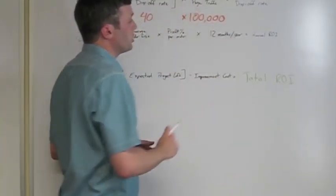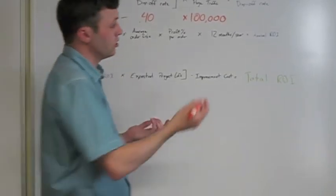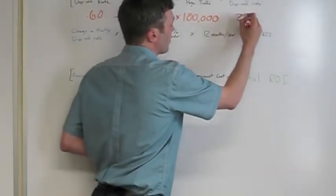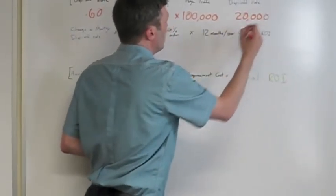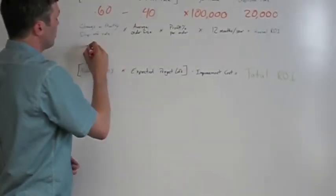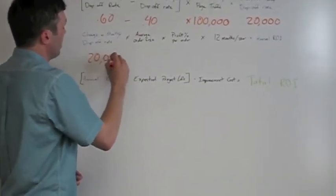And let's say you have traffic right now of about 100,000 people coming in. So your change in monthly drop off rate would be 20,000. So bringing that over here, you get your 20,000 drop off rate. That's your change.